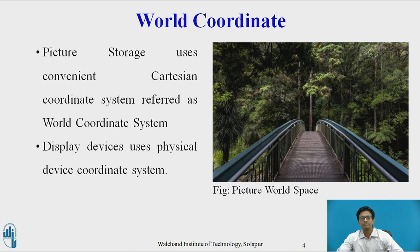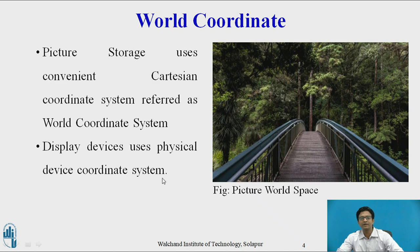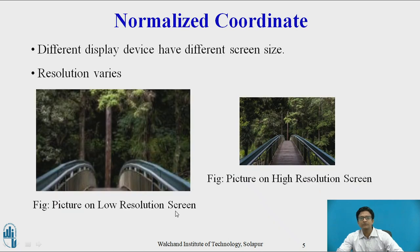World coordinate — you can see this picture from a world coordinate space. The picture storage uses a convenient Cartesian coordinate system referred to as the world coordinate system, where the display device uses a physical device coordinate system. We require to map world coordinates to this display device coordinate in order to display an image on your screen. This requires normalized coordinates.